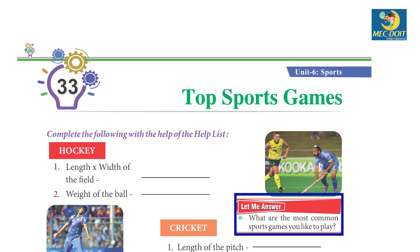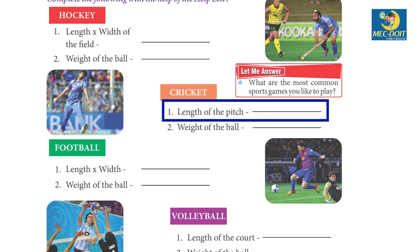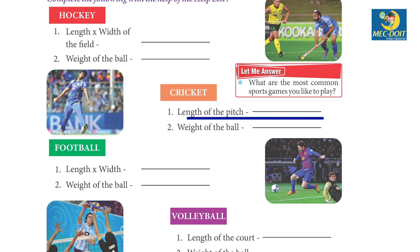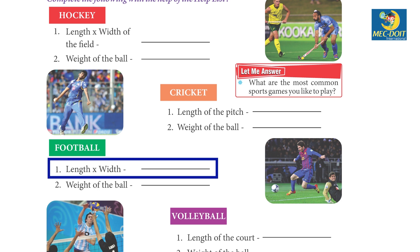What are the most common sport games you like to play? Cricket: length of the pitch — 22 yards. Weight of the ball — 155 grams or 163 grams. Football: length into width — 90 meters into 45 meters. Weight of the ball — 450 grams.